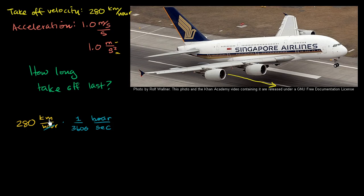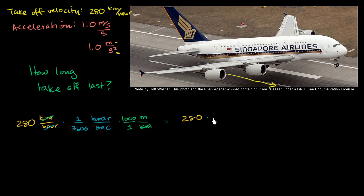Now let's also convert kilometers to meters. We have kilometers in the numerator, so we put kilometers in the denominator to cancel, and meters in the numerator. There are 1,000 meters per kilometer. The kilometers cancel, leaving us with 280 times 1,000, all divided by 3,600, in units of meters per second.